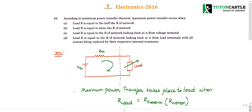Question number 64. According to the Maximum Power Transfer Theorem, maximum power transfer occurs when — you might have already known this. Maximum power takes place only when load resistance equals source resistance. Let us see the basic definition and check the options.